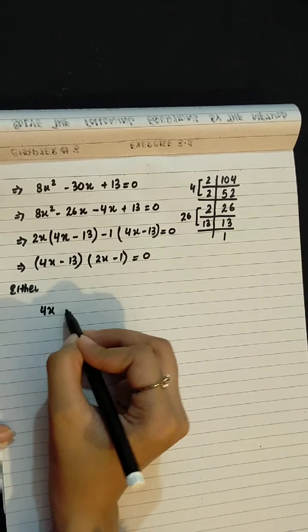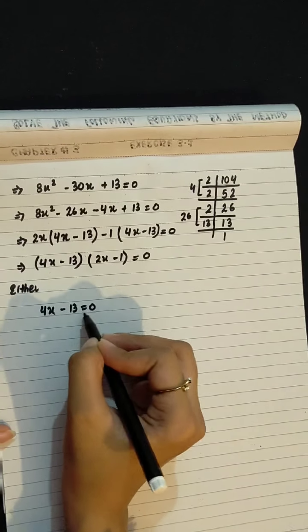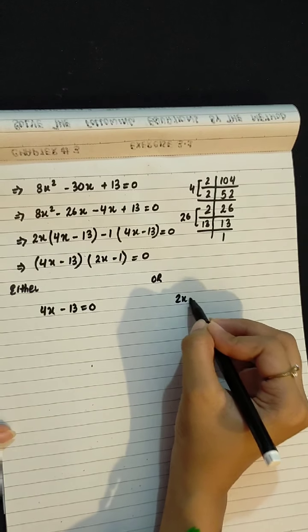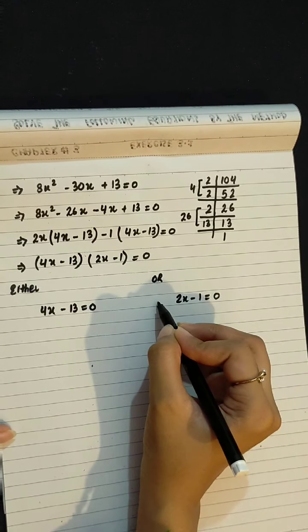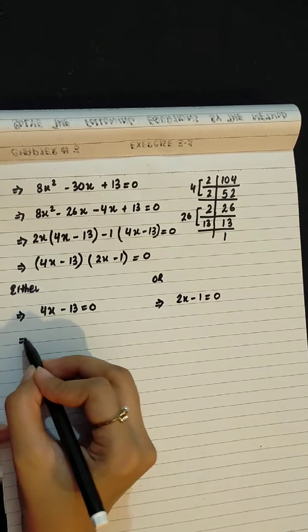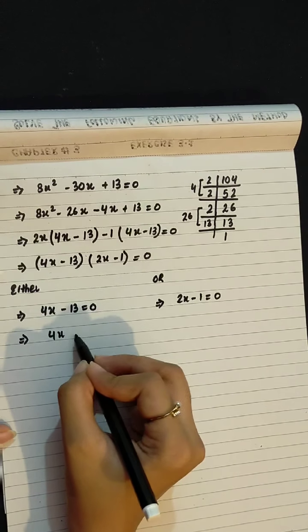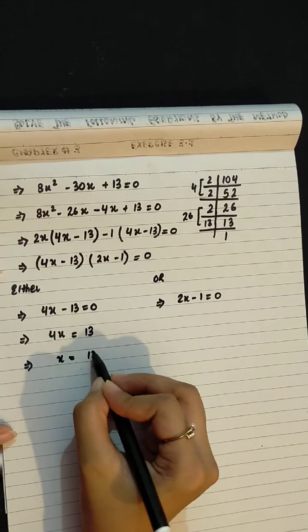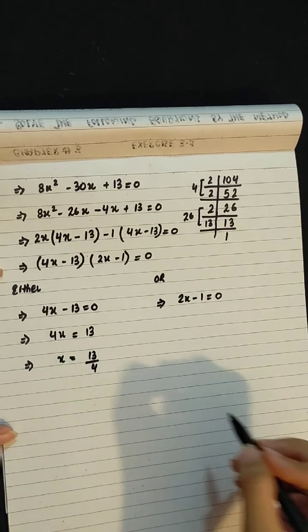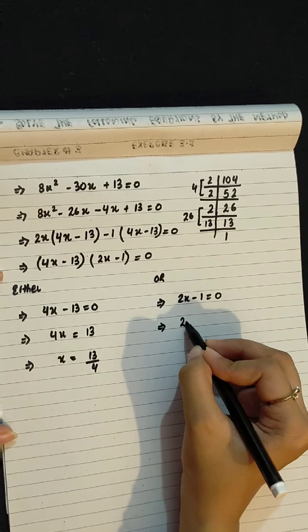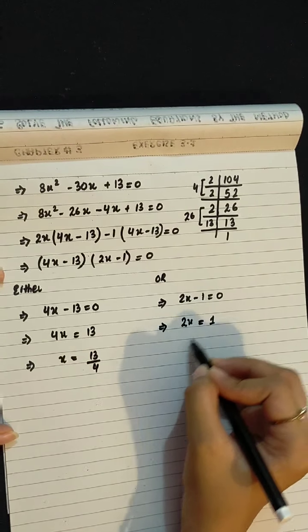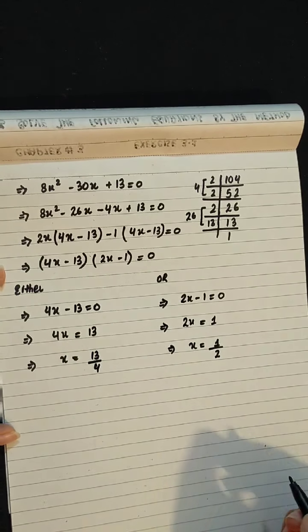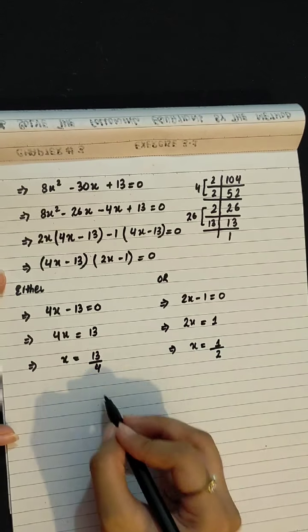Either 4x minus 13 equals to 0 or 2x minus 1 equals to 0. This minus 13 becomes positive 13. 4x equals 13, x equals 13 over 4. This minus 1 shifts to positive 1. 2x equals 1, x equals 1 over 2.